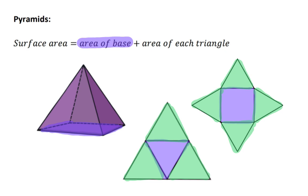In a pyramid, it is important to be able to identify all the different heights. Firstly, we have the height of the pyramid — measured from the middle of the base straight to the apex. Next, we have the perpendicular height of each of the triangular sides of the pyramid, measured from the base of the triangle; this is called the slant height. And finally, if it is a triangular pyramid, the base triangle also has a perpendicular height used to determine the area of the base triangle.